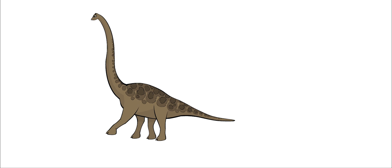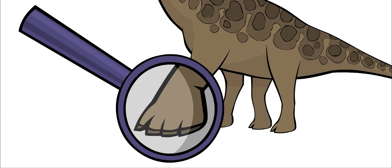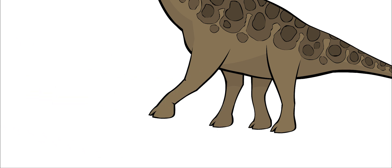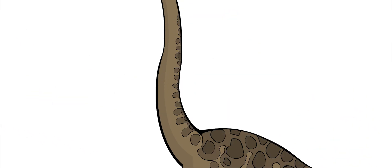Each foot had five toes and thick pads at the bottom. It had a claw on the first toe of each front foot and claws on the first three toes of each rear foot.